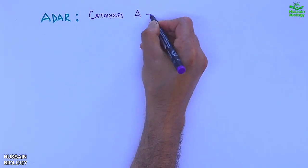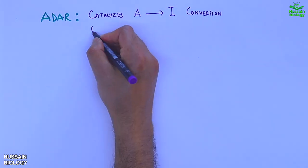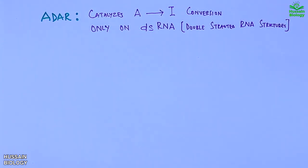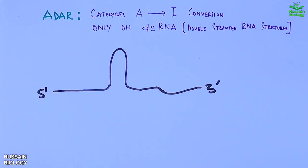The ADAR, which is adenosine deaminase acting on RNA, catalyzes the adenosine to inosine reaction. And this conversion occurs only on double stranded RNA structures. Like when we have the RNA molecule structures like this shown in the diagram.